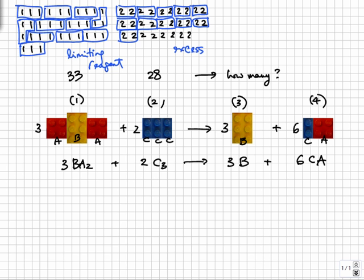A faster way to do the same thing is to divide the number of each aggregate by stoichiometry coefficient. 33 units of BA2 divided into sets of 3s give 11 sets, and 28 units of C3 divided into sets of 2s gives 14 sets. So by this we see that BA2 will be exhausted before C3.